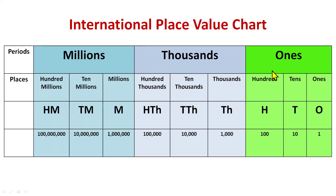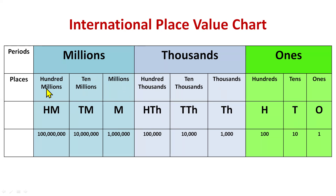We have shortcuts for all these places. For ones we use O, for tens capital T, for hundreds capital H, for thousands capital TH, for ten thousands TTH, for hundred thousands HTH, for millions M, for ten millions TM, and hundred millions HM.